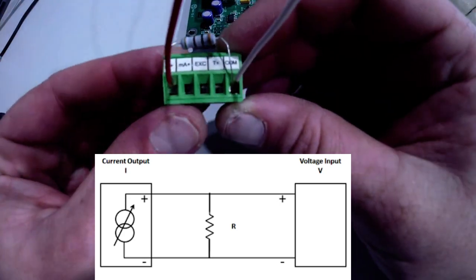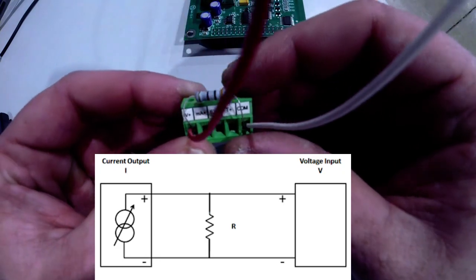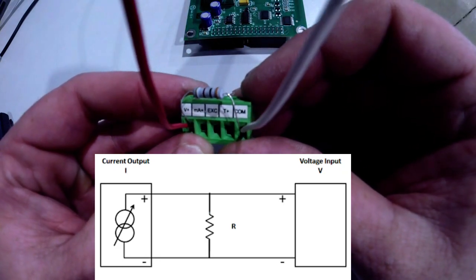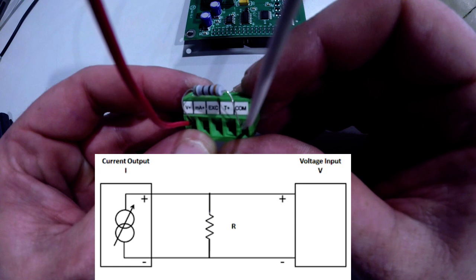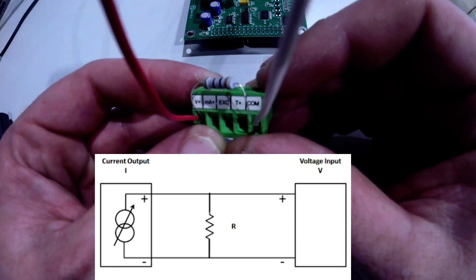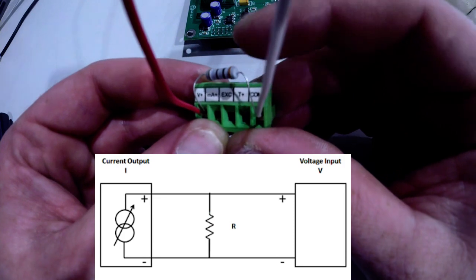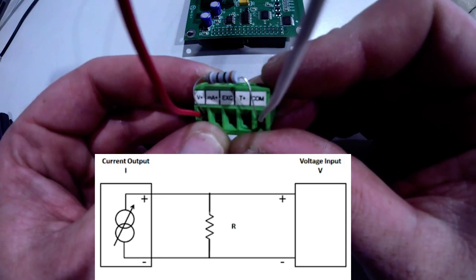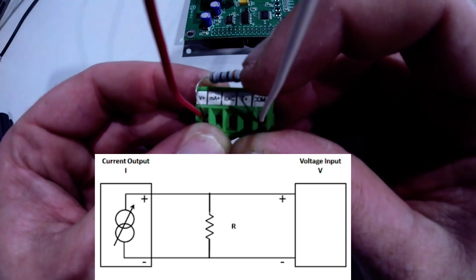And there we have it. With a single resistor and a 0 to 20 milliamp output, we can change our output from 0 to 20 milliamps to 0 to 10 volts DC with the 500 ohm resistor.